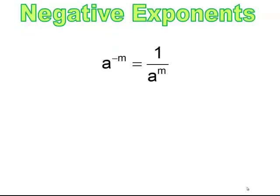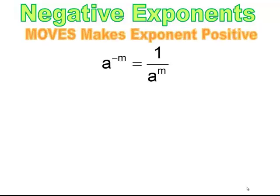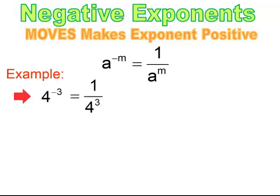Now we're going to deal with negative exponents. Negative exponents mean the base is in the wrong position, and when the base is in the wrong position, you need to move it — and make the exponent positive. So if I have a to the negative m power, it goes under 1 and I get 1 over a to the m. For example, 4 to the negative 3rd power means 1 over 4 to the 3rd, which simplifies to 1 over 64. It's not a negative number — it is a negative power, meaning I move and make the power positive.